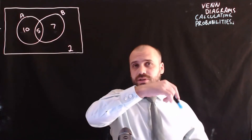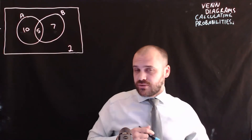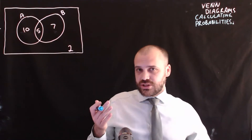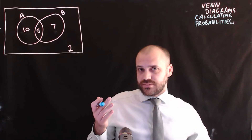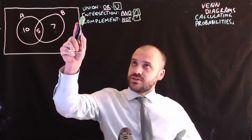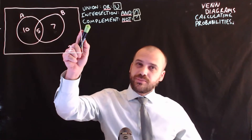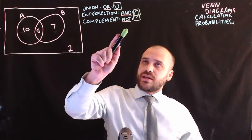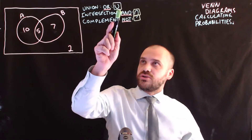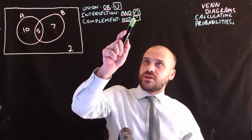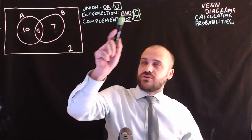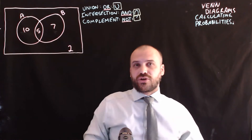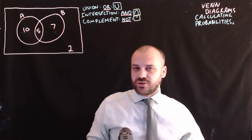We're going to be calculating probabilities from Venn diagrams. I'm going to give you some notation to help you out with this. Our three important words are union, intersection, and complement. They mean 'or,' 'and,' and 'not.' A U for union, an upside-down U for intersection, and an apostrophe for complement or not.